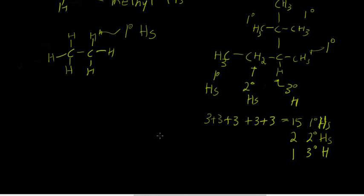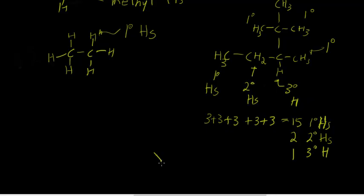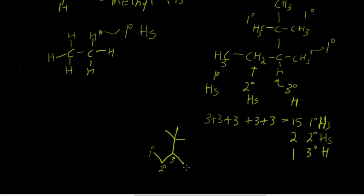Now if I wanted to draw the more condensed bond-line representation of this molecule, it would look like this. The hydrogens attached to this carbon are primary because this carbon is only attached to one other carbon. The ones attached to this carbon are secondary — this carbon is attached to two carbon atoms. The ones attached to this carbon are tertiary because this carbon is attached to three carbons. There are no hydrogens attached to this carbon, but these three are primary as well, because these carbons are only attached to one other carbon.